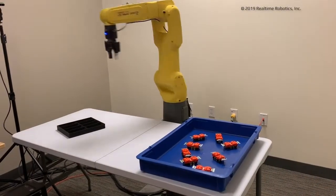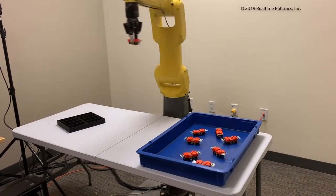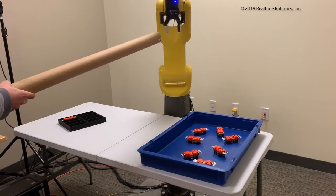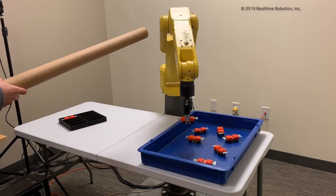RapidPlan has the first commercial processor designed specifically to enable high-performance motion planning. It can check 20 million robot motions in under a second.